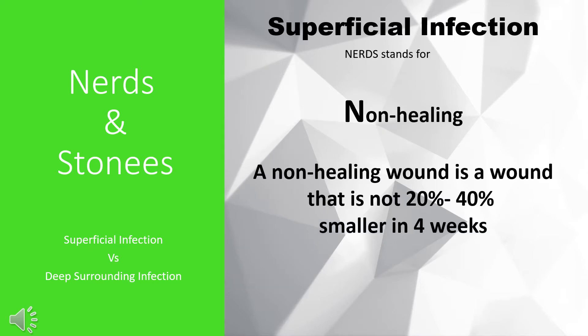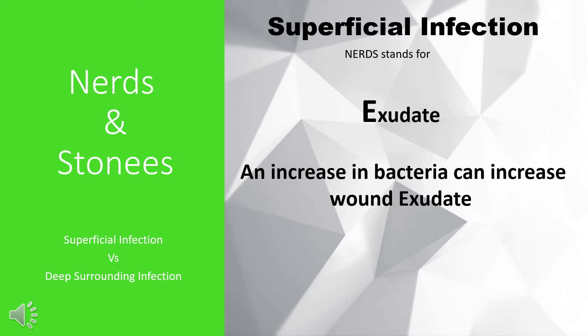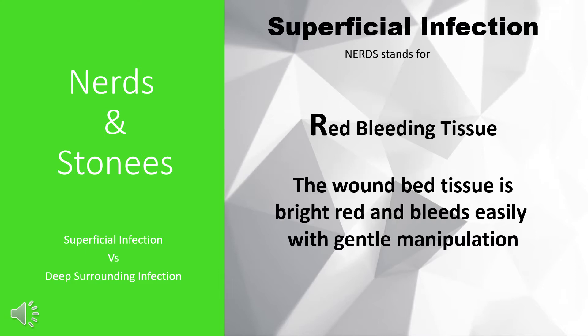A non-healing wound is a wound that is not 20 to 40 percent smaller in four weeks. An increase in bacteria can increase wound exudate. Red bleeding tissue is when the wound base is bright red and bleeds easily with gentle manipulation.